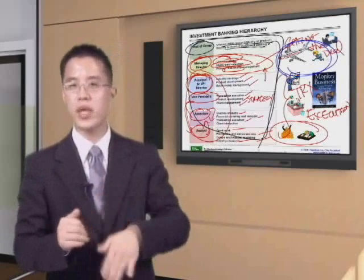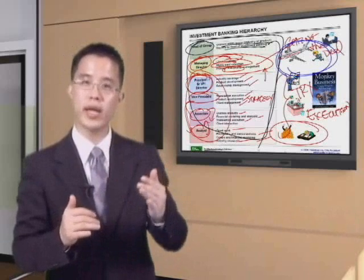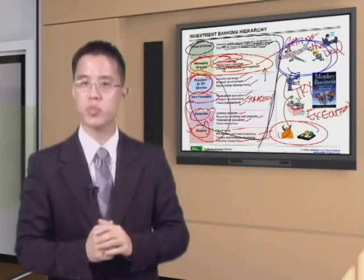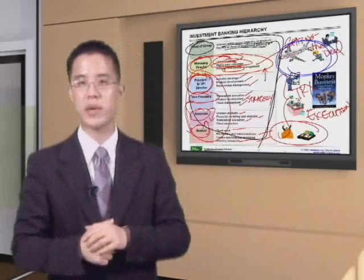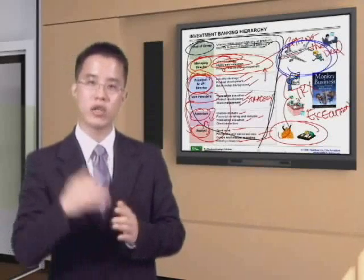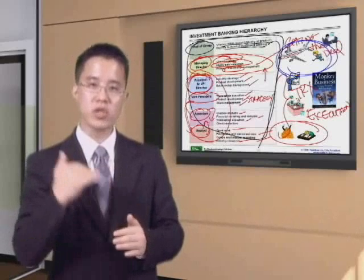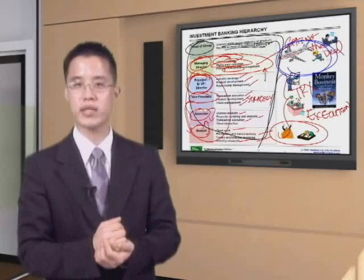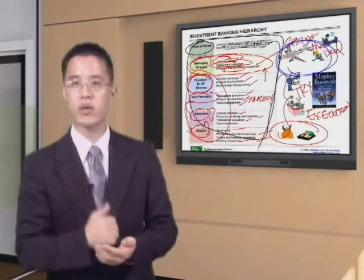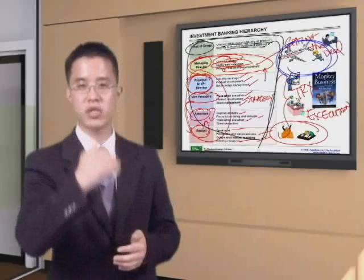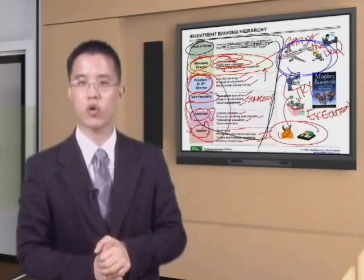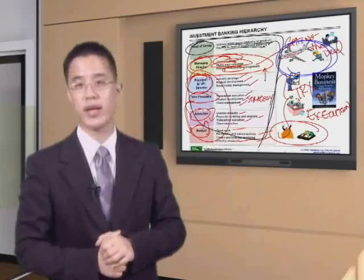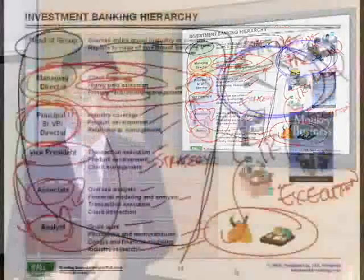The principal or senior vice president might be a promoted VP or someone brought in from the industry. The managing director is ultimately responsible for bringing in clients. A common path is two-to-three years as an analyst, returning after business school as a first-year associate, working three-to-five years at that level, then deciding whether to continue up the investment banking hierarchy — and progressively, your hours get a lot better.